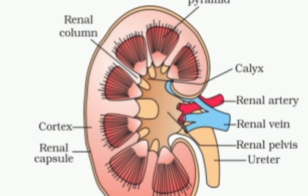Now let us enter into the internal structure of the kidney. The longitudinal section of the kidney shows two distinct regions: outer cortex and inner medulla. These two regions can be identified on the basis of color variation, where the outer zone, i.e. cortex, is dark colored, and the inner zone, i.e. medulla, is pale. Medulla is divided into multiple cone-shaped masses of tissue called renal pyramids.